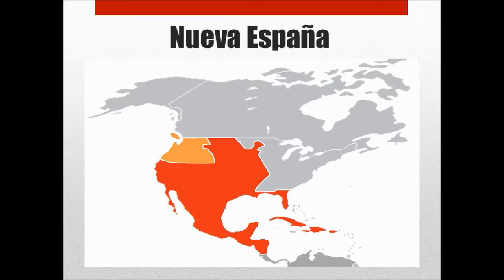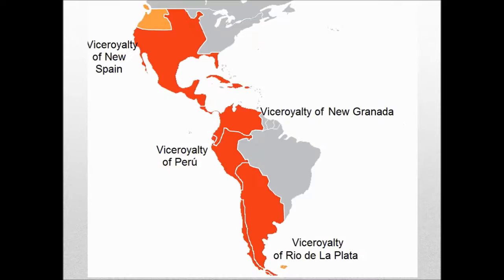The policies the Spanish pursued were based on trade protectionism and state monopolies. Over time, the Spanish divided their New World territories into four separate vice royalties. The first, the vice royalty of New Spain, corresponded to modern-day Mexico, Central America, and the Caribbean islands.